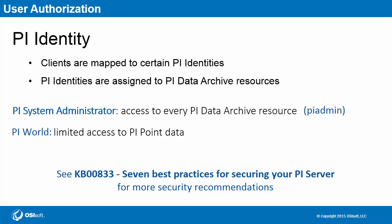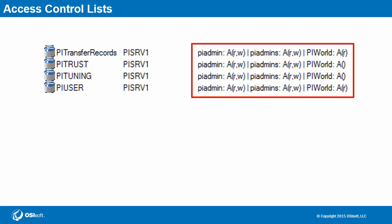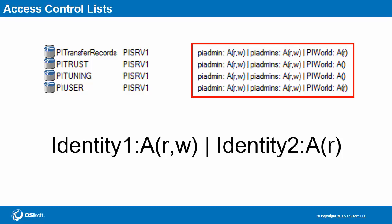We'll take a look at a diagram that illustrates all of this in one complete view. But quickly, let's go over two more topics. When we talk about PI identities and granting them access to resources, access control lists come into play. The syntax is the PI identity name first, and then there are allowable permissions, either read or write, with PI identities separated by a vertical bar.